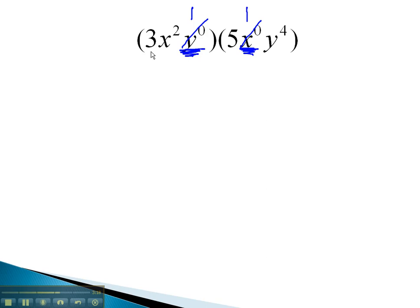Now, looking at the numbers, we have 3 times 1 times 5 times 1 is 15. We also have an x squared and a y to the 4th, and this becomes our simplified solution.